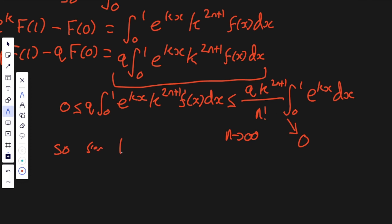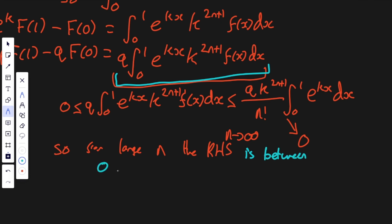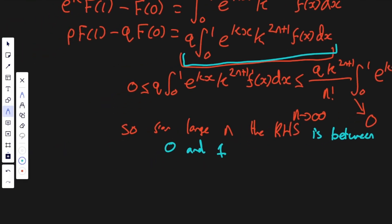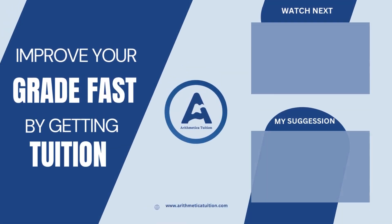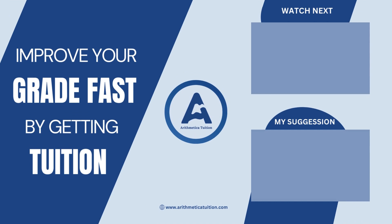But the left-hand side — p times F of 1 minus q times F of 0 — is an integer. So we have an integer strictly between 0 and 1 for large n, which is a contradiction.